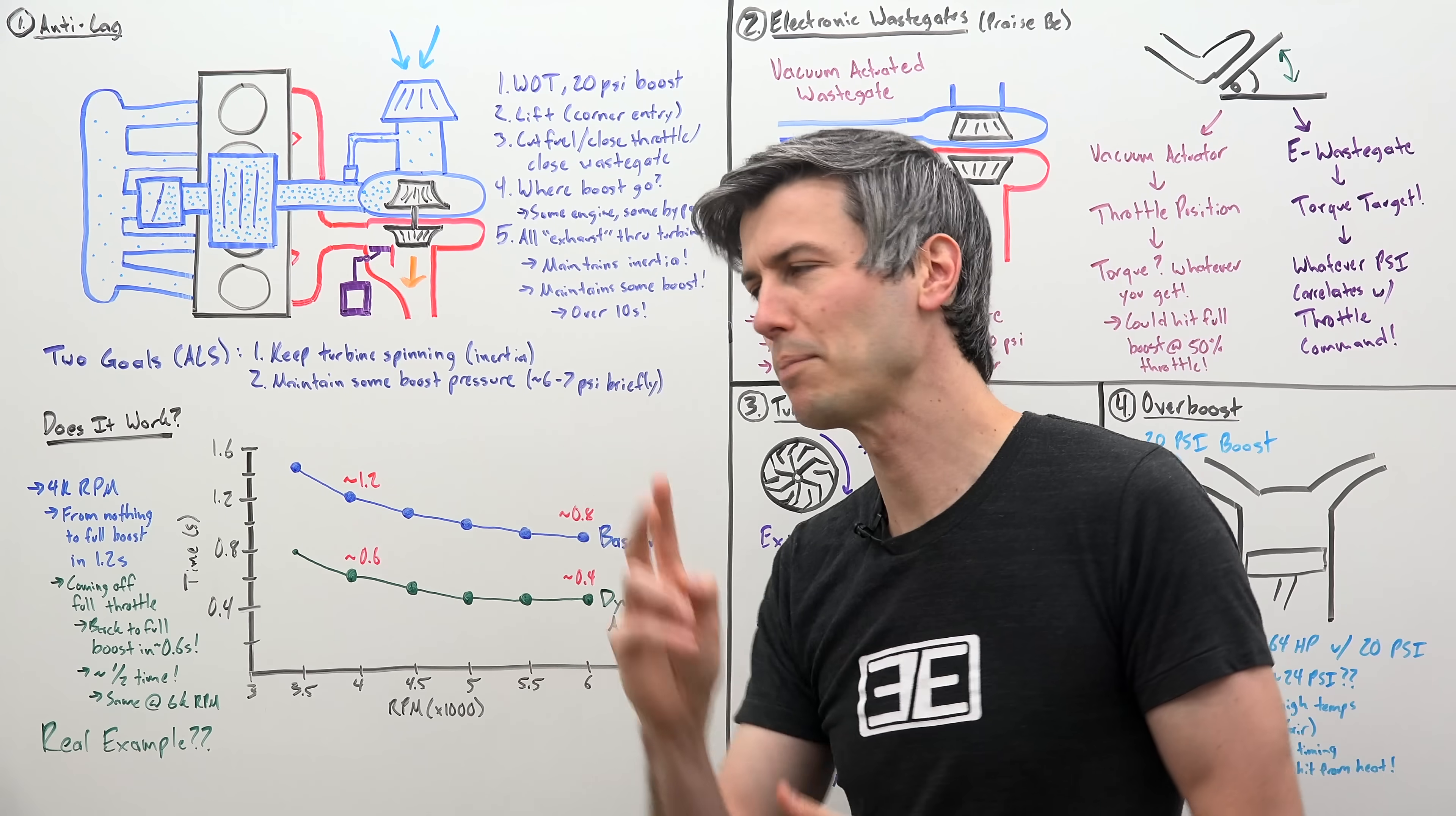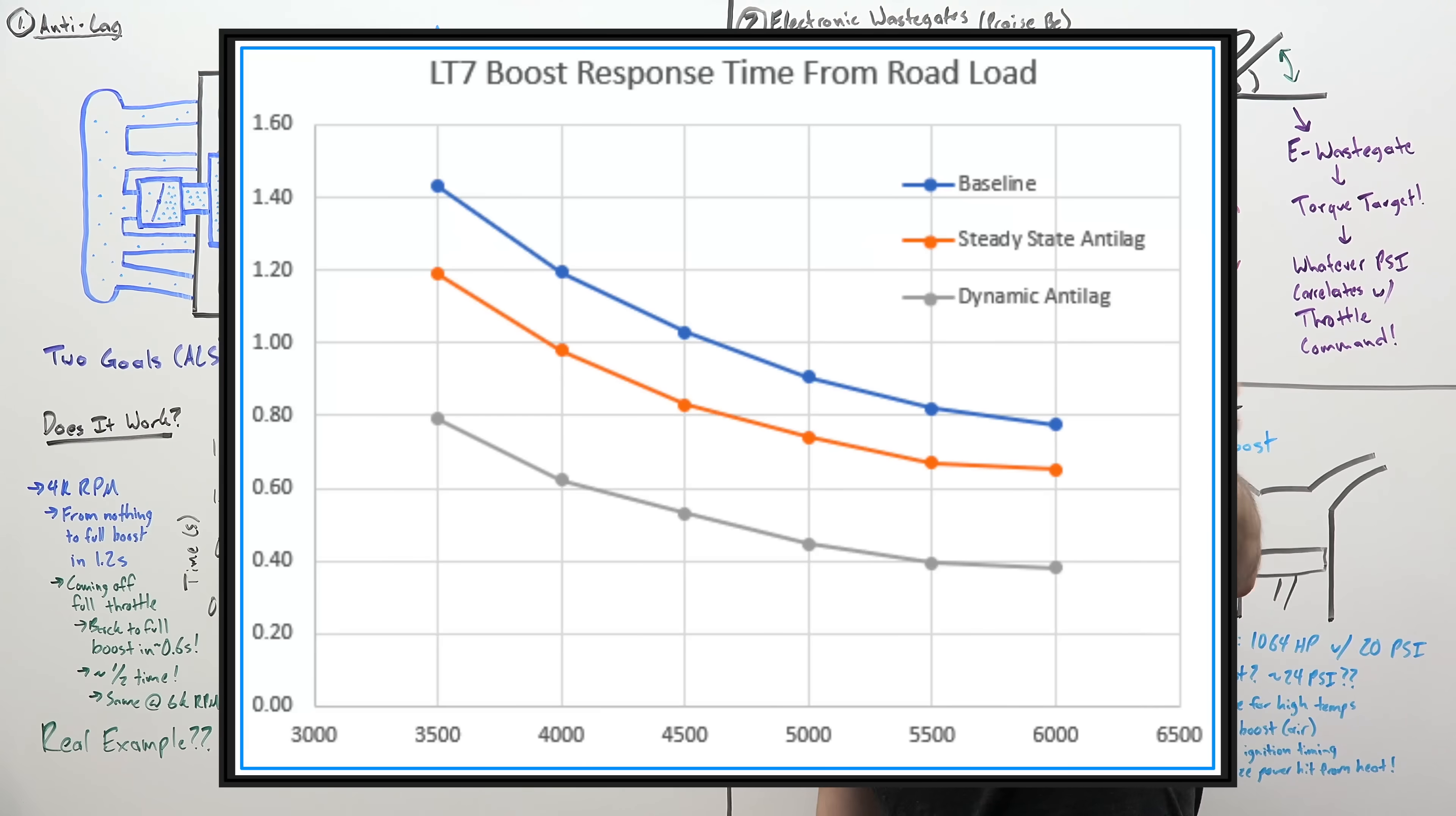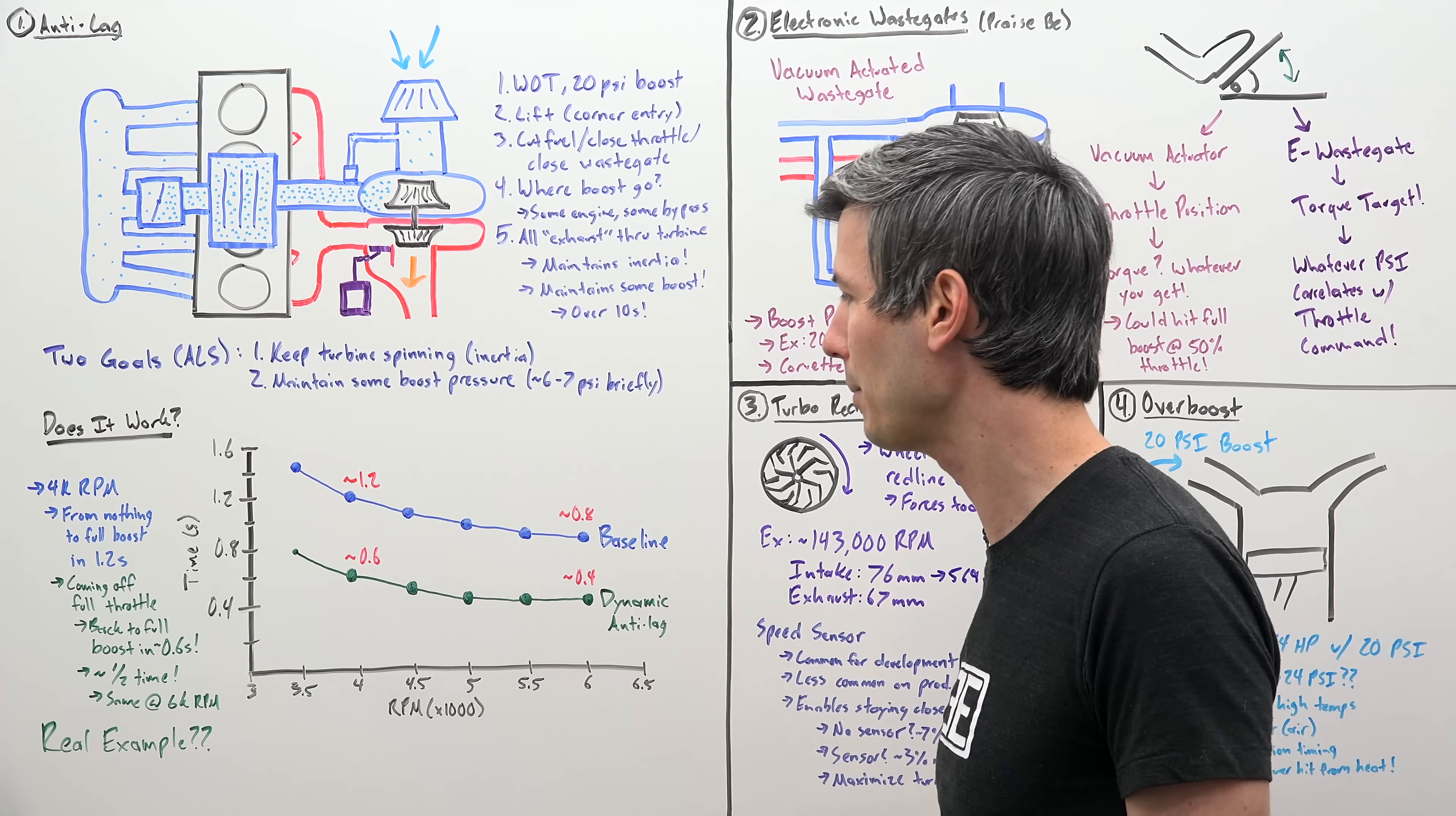So two great pieces of data on this. First, Corvette engineers actually provide a plot of at what RPM, how much time does it take to reach full boost? I'll include the actual plot on screen so you can have a look at that. But essentially, looking at this, you can see that using the anti-lag system versus if you're to just go from absolutely nothing and floor it and wait and see how much time it takes.